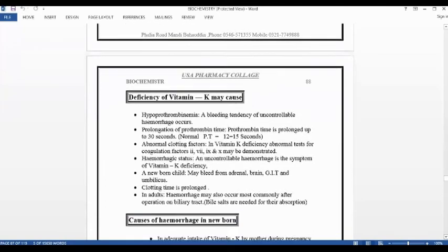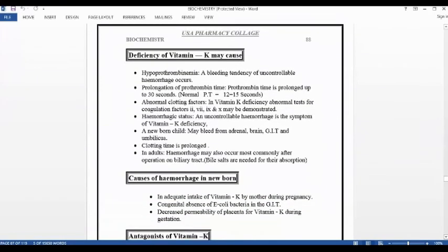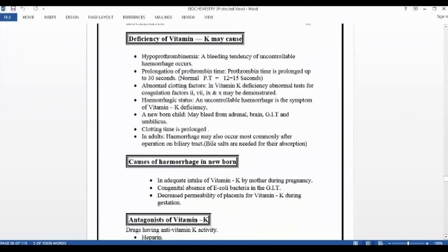Prothrombin is going to be affected. Prolongation of prothrombin time, prothrombin time is prolonged up to 30 seconds. If you have been given this topic, then you have to be clear about what is prothrombin, where it is made from, and how it converts into thrombin, which then converts into fibrin for blood clots. Normal prothrombin time is 12 to 14 seconds.